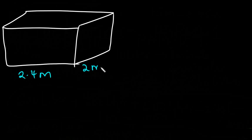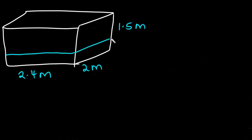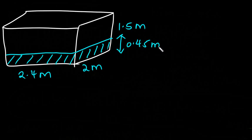We have a rectangular water tank. This tank measures 2.4 meters long, 2 meters wide and 1.5 meters high. We are told the tank contained some water up to a height of 0.45 meters. So the first question is: calculate the amount of water in liters needed to fill up this tank.